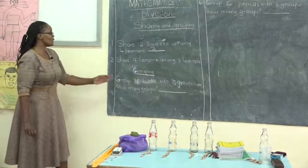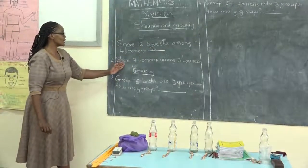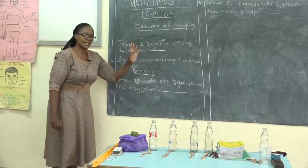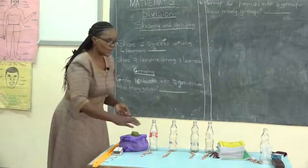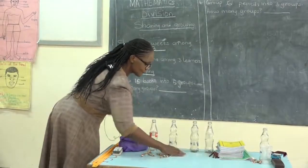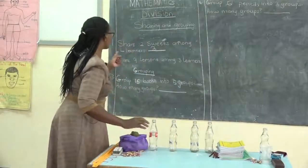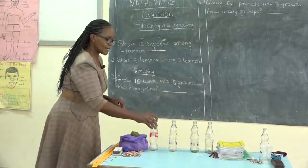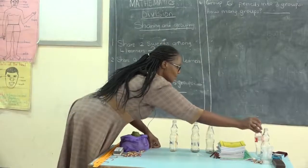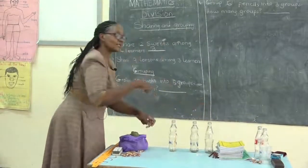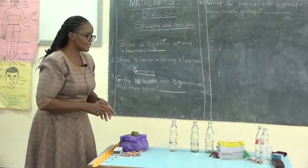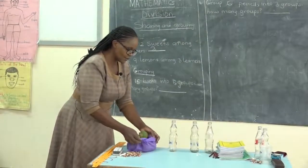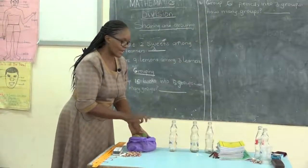We move to the next one: share nine lemons among three learners. We are done with our sweets. To share nine lemons among three learners, I remove one bottle so I'm left with three bottles representing the learners. Here are my lemons — we are going to share them among the three learners.